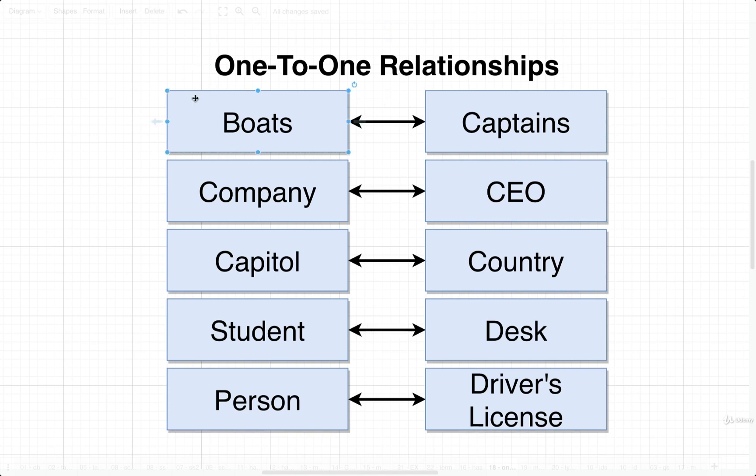The first example we might consider is boats related to captains. A boat only has one captain at any given time, and likewise, a captain is only the captain of one boat at a time. We can generalize this and just assume that one boat has one captain, and one captain has one boat.